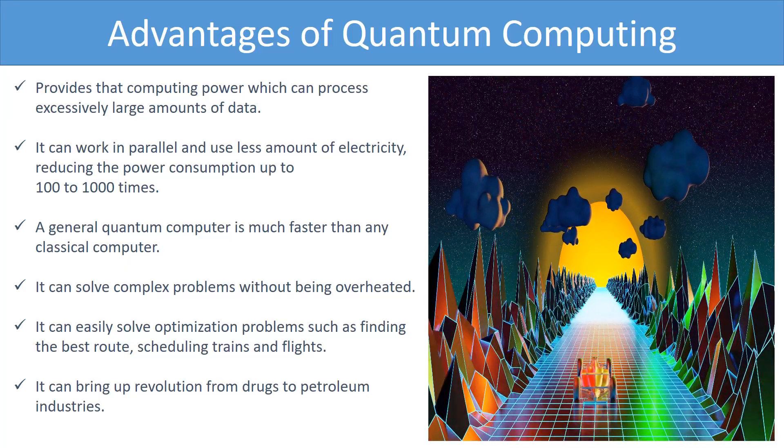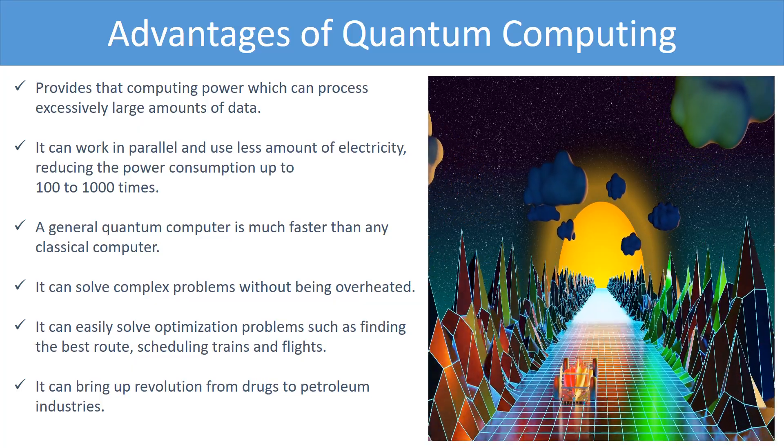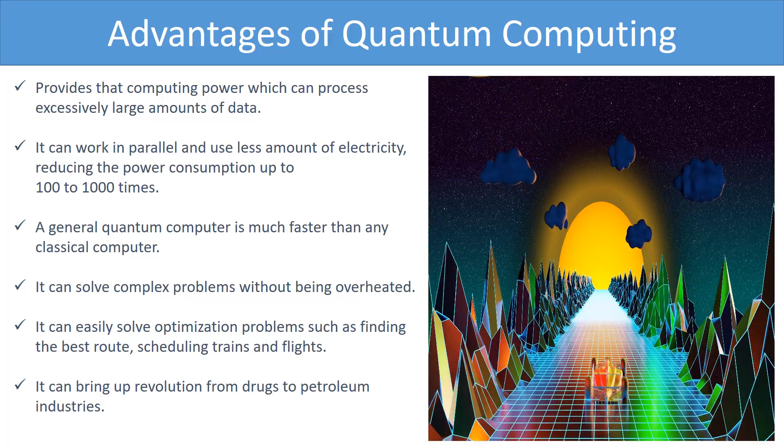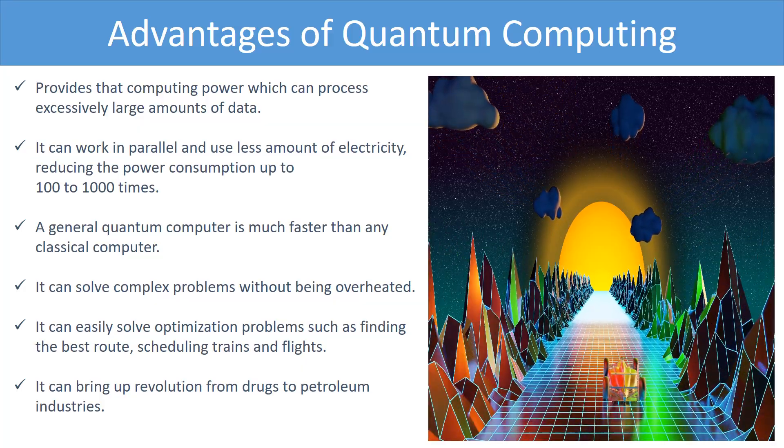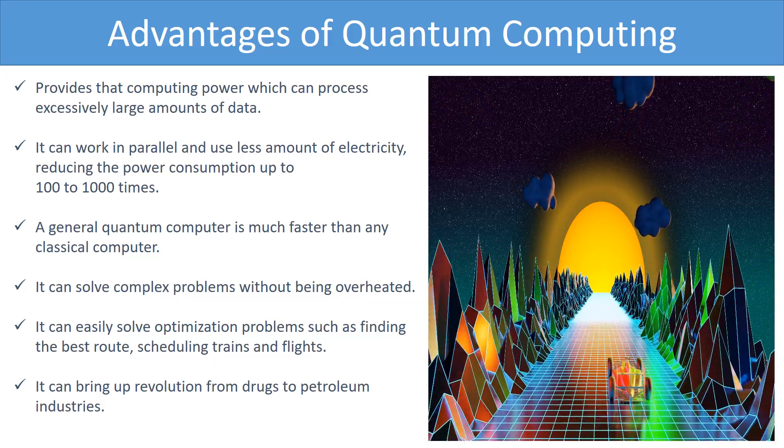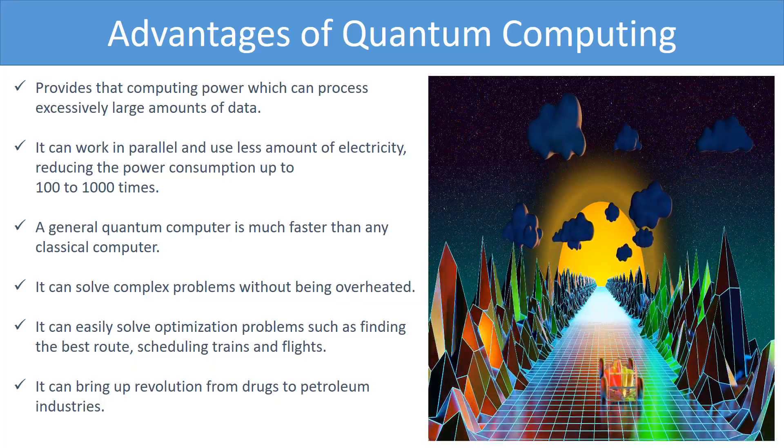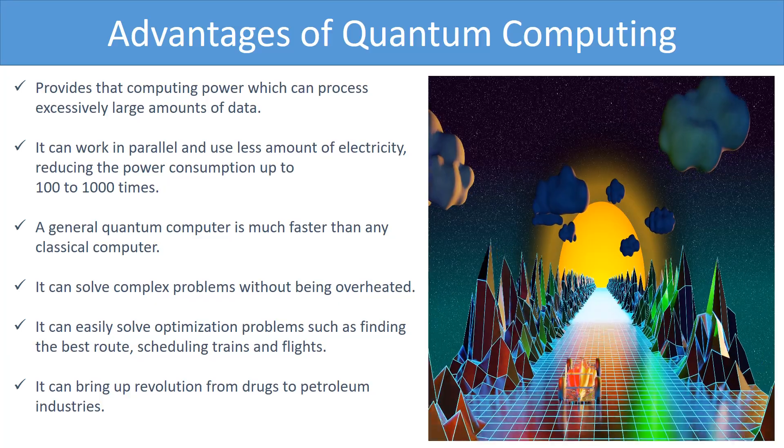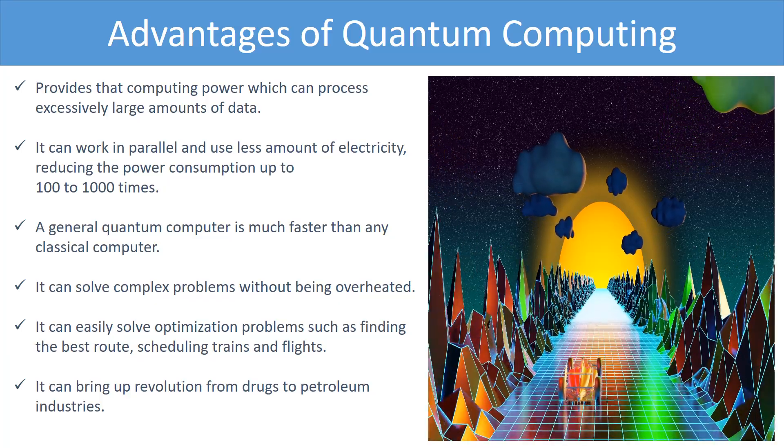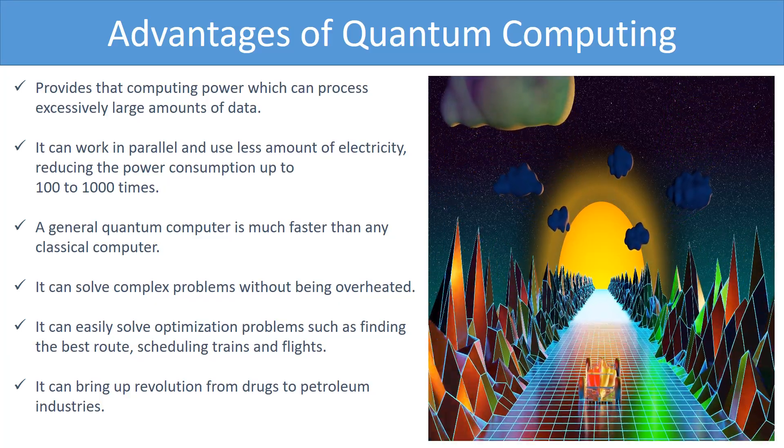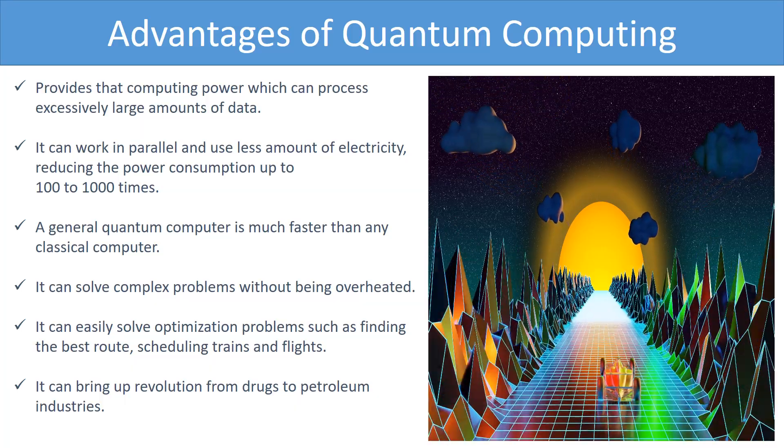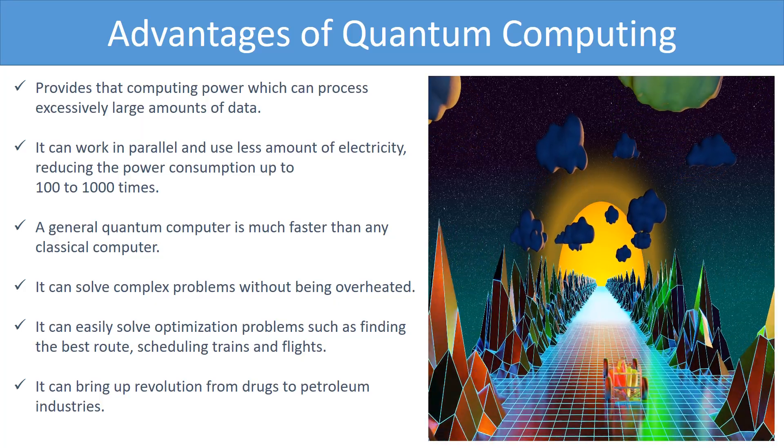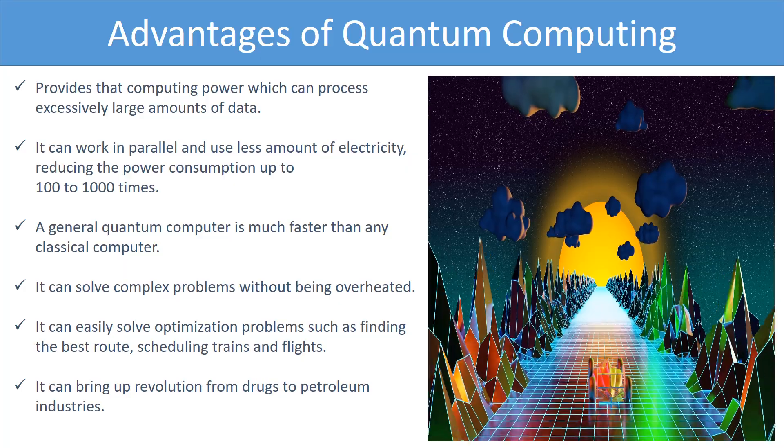Due to the teleportation phenomenon known as quantum tunneling, it can work in parallel and use less amount of electricity, hence, reducing the power consumption up to 100 to 1000 times. A general quantum computer is thousands of times faster than any classical computer. For example, Google has made a quantum computer that is 100 million times faster than any classical computer present in its lab. It can solve complex problems without being overheated.